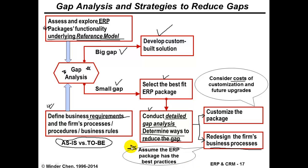Re-engineering your own processes still has a cost involved, but it makes more sense if the best practices embedded in the package are really better than what you have now. In practice, reducing the gap will likely be a combination of both strategies: customize the package for areas where you have unique practices you want to support, and re-engineer your current business processes in areas where the package offers a better way of handling things.